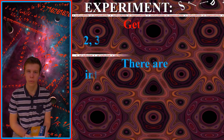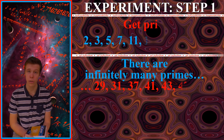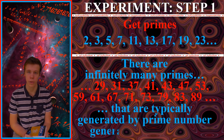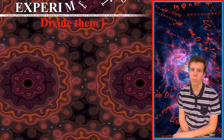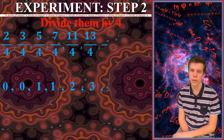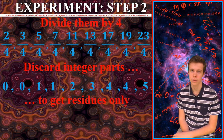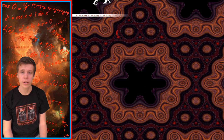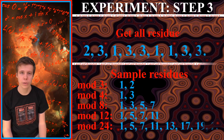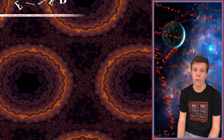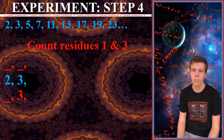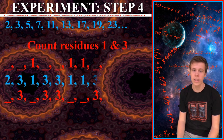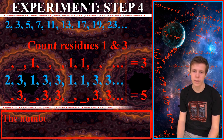Let's do the following experiment. First, let's take consecutive prime numbers. Second, divide them by 4 and discard the integer part of the division. Third, get all consecutive residues. Finally, count the number of 1s and 3s you got.